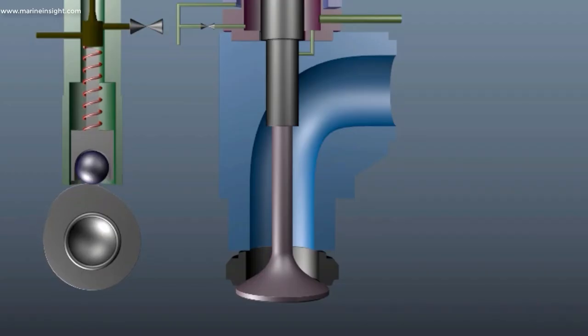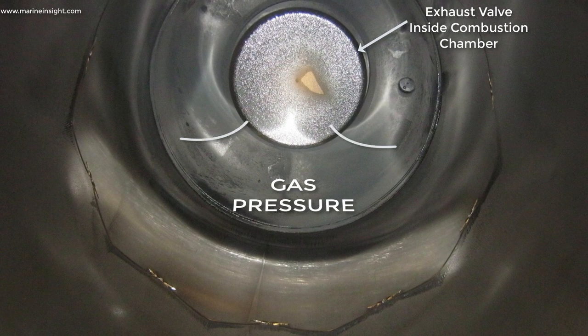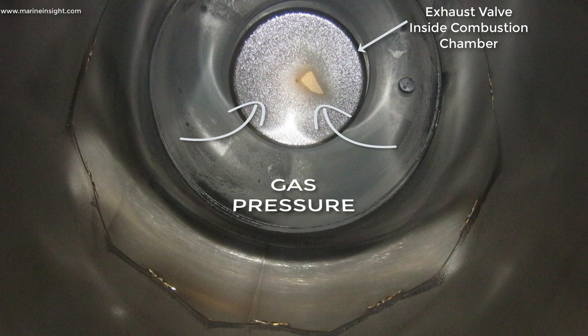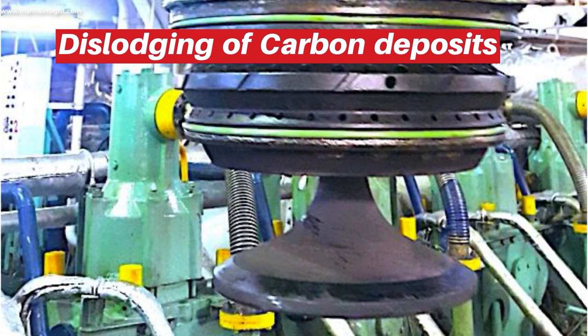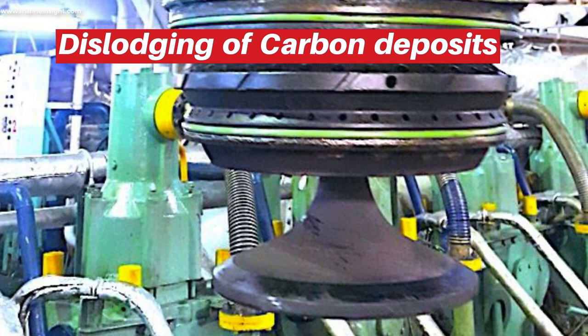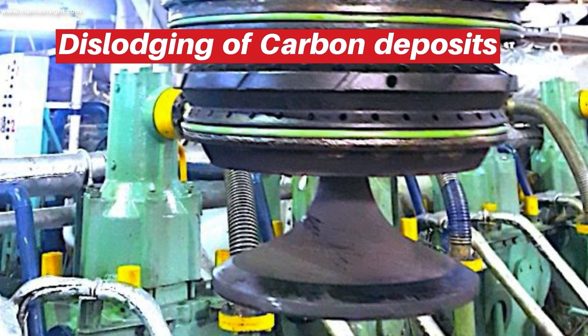Exhaust valves of two-stroke main engine open inwards into the cylinder so that the gas pressure in the cylinder will ensure positive closing and help dislodge any buildup of carbon on valve seat.